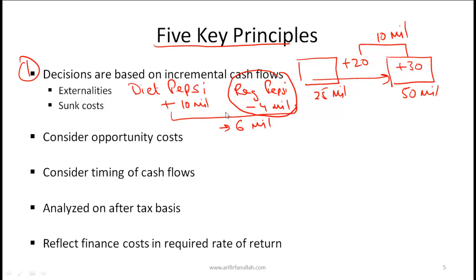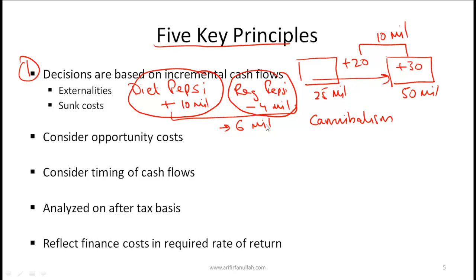This is called a negative externality, and the term sometimes used is cannibalism — Pepsi is cannibalizing its own sales by introducing Diet Pepsi. A company might still do this because overall cash flow may be higher, but we must look at the external effect. Externalities can also be positive: for example, if Pepsi launches a chips business and selling chips increases soft drink sales, those increased sales should be factored into the cash flow analysis for the new chips project.